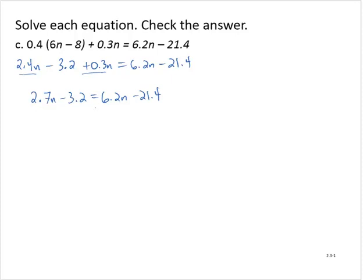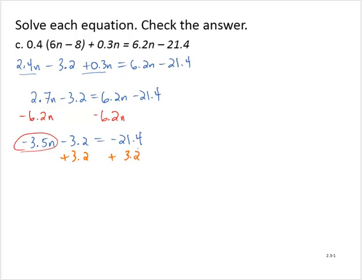There are variable terms on both sides of the equation. I'll move them to the left by subtracting 6.2n from both sides, yielding negative 3.5n minus 3.2 is equal to negative 21.4. Identifying the variable term, I isolate it by adding 3.2 to both sides, yielding negative 3.5n equals negative 18.2. Dividing through by negative 3.5, we find that n is equal to 5.2.